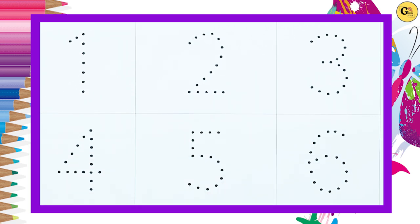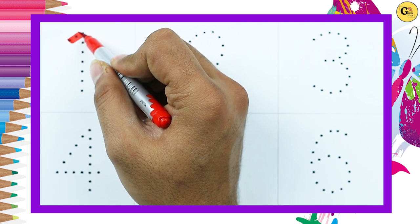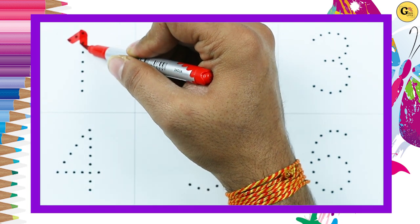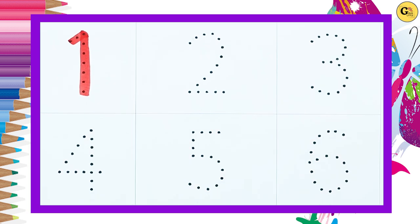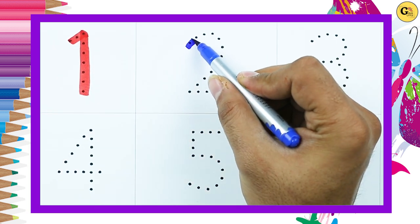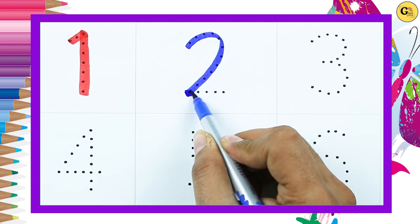How to write numbers 1 to 10. It's number 1, yes, number 1 with red color. Number 2, it's 2 with blue color.